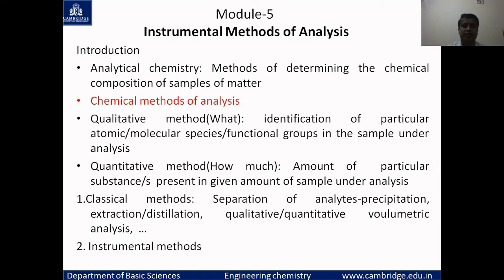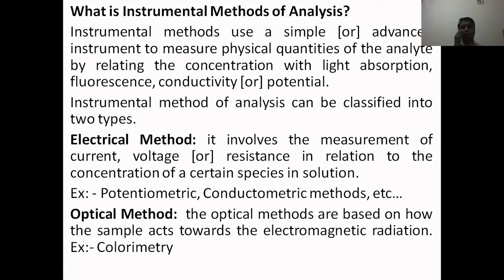Instrumental methods of analysis use a simple or advanced instrument to measure the physical quantities of the analyte by relating concentration with light absorption, fluorescence, conductivity, or potential. These methods can be classified into two types: electrical methods and optical methods.